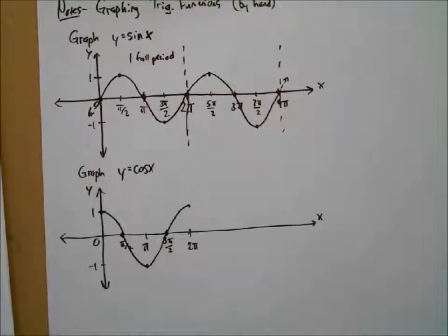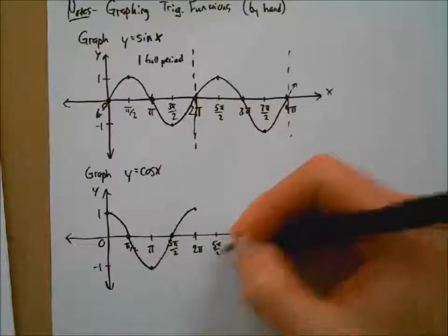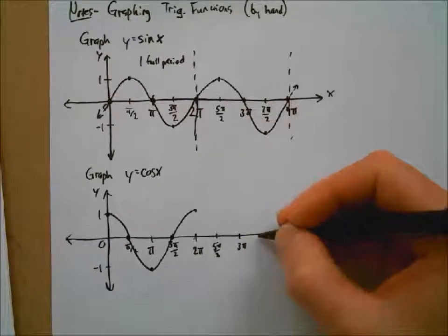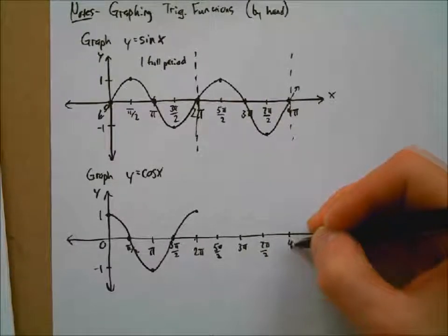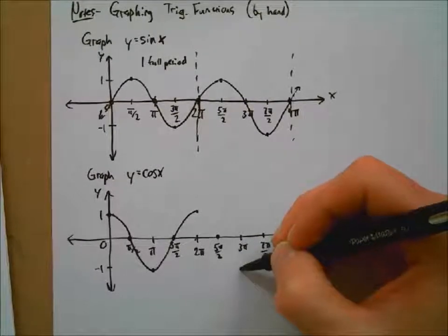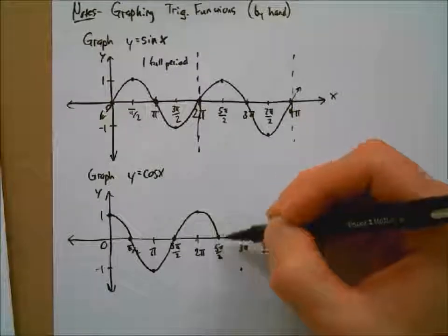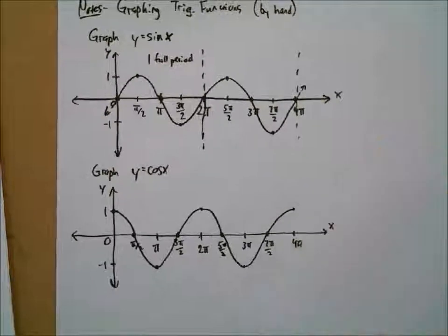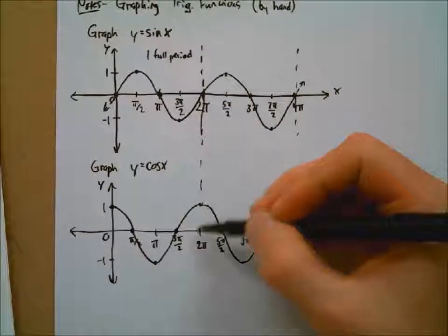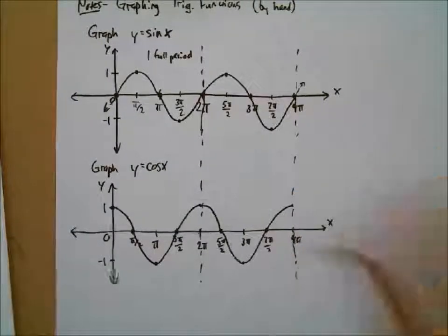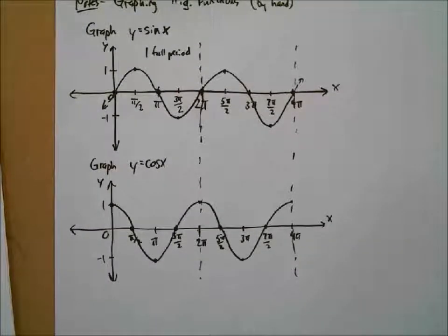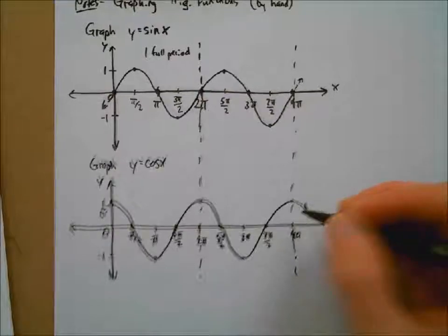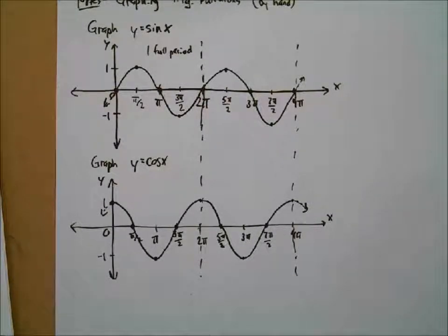We could continue on — 5 pi over 2, 3 pi, 7 pi over 2, 4 pi. So I can do another period here. And of course we expect cosine to go on forever to the left and to the right. We're not going to get to tangent today — tangent comes next week, so you won't have to worry about tangent for your quiz. We're going to focus just on sine and cosine.